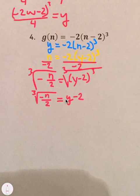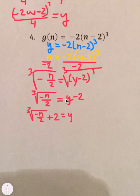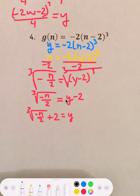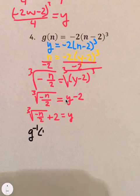And then we add 2 to both sides. So, negative n over 2 all inside the cube root plus 2 outside the cube root equals y. And in the last step, rewrite it. We're going to write it as g inverse of n equals the cube root of negative n over 2 plus 2.